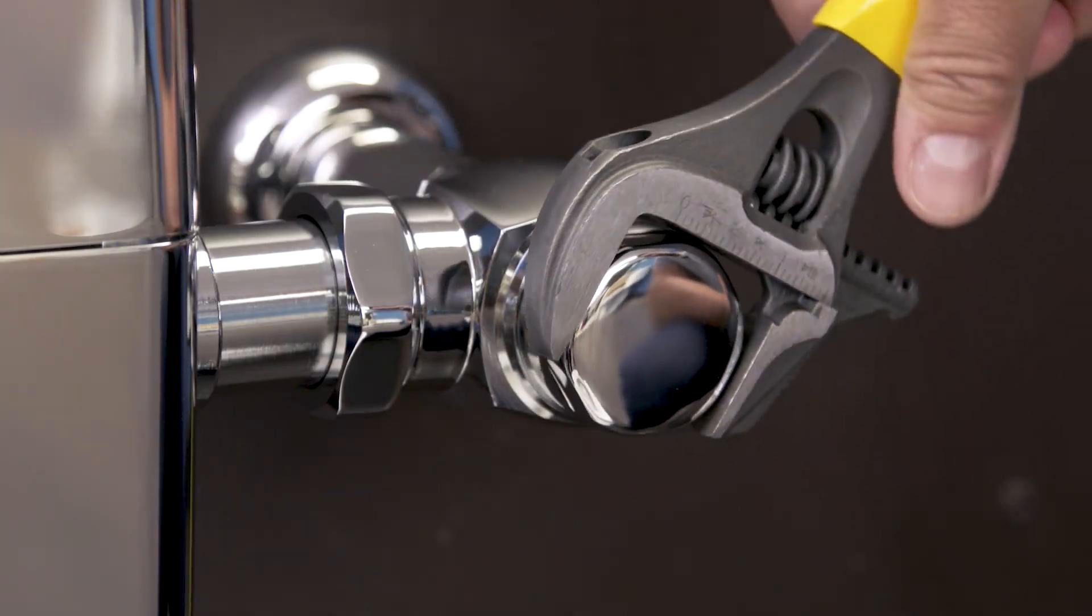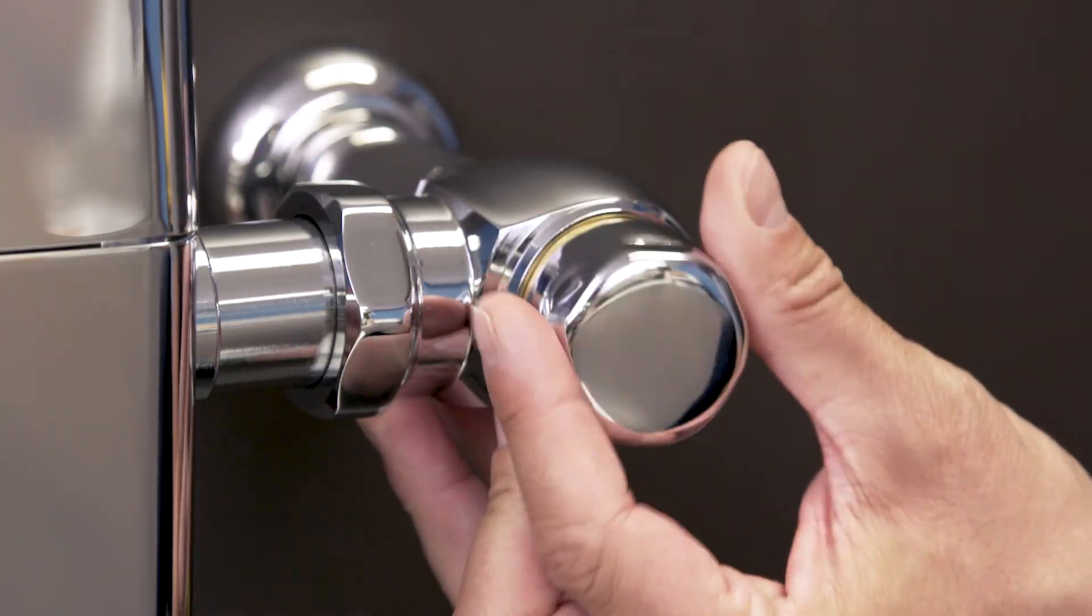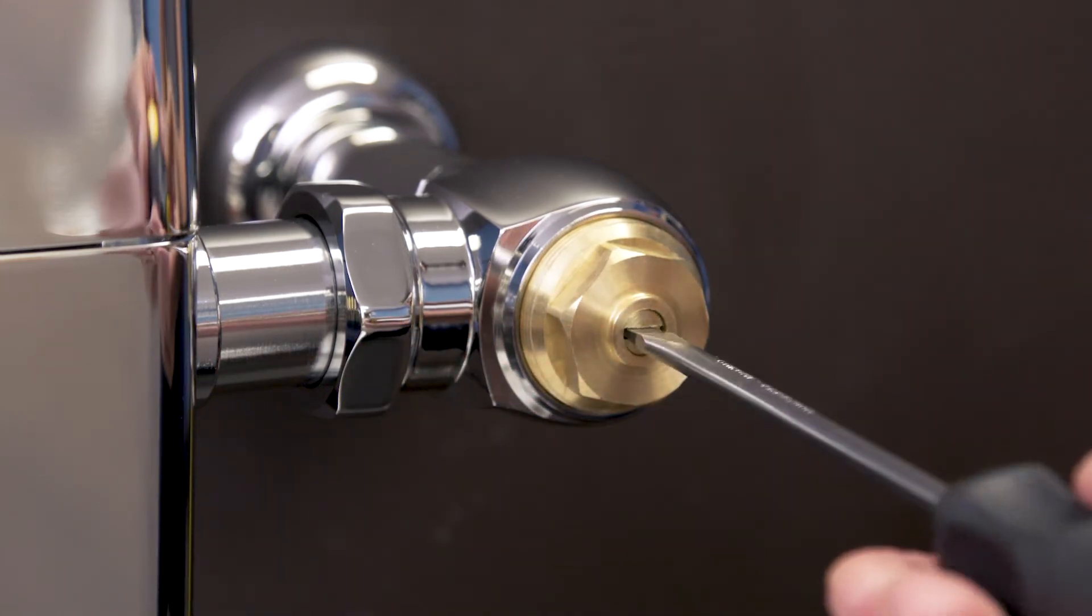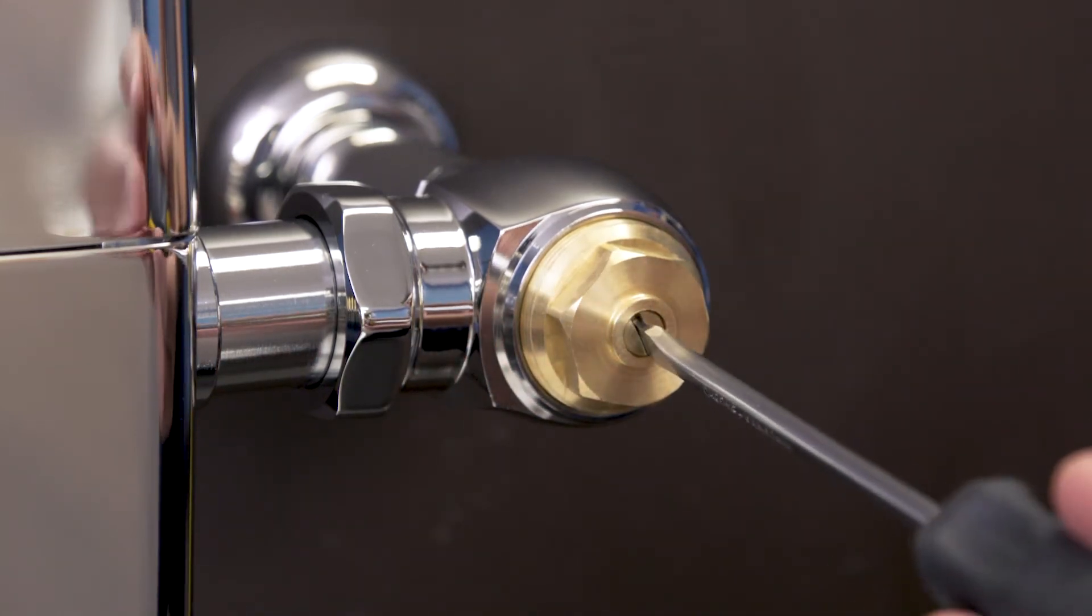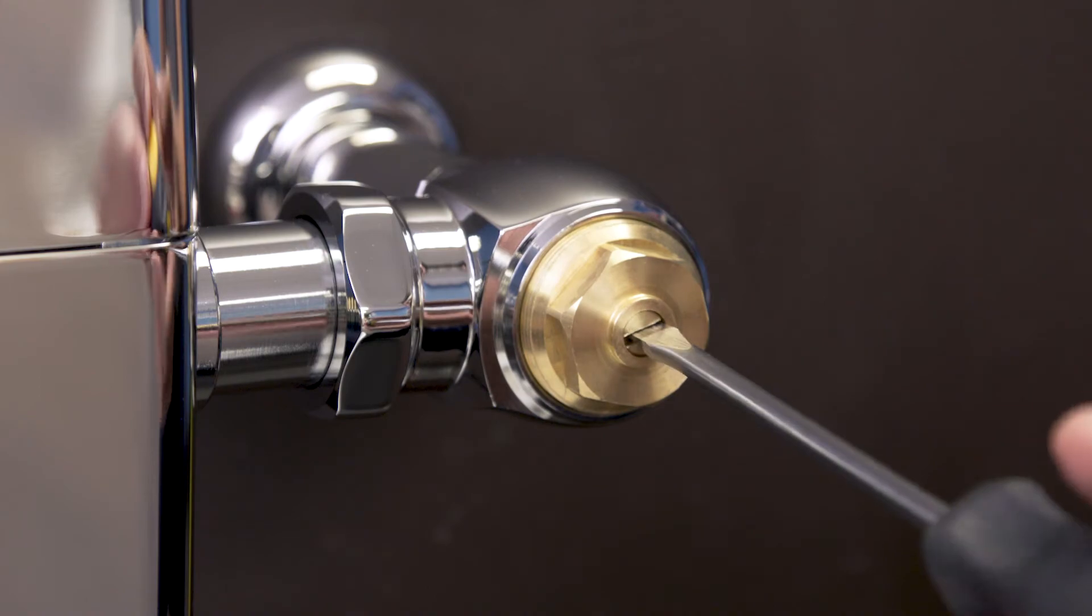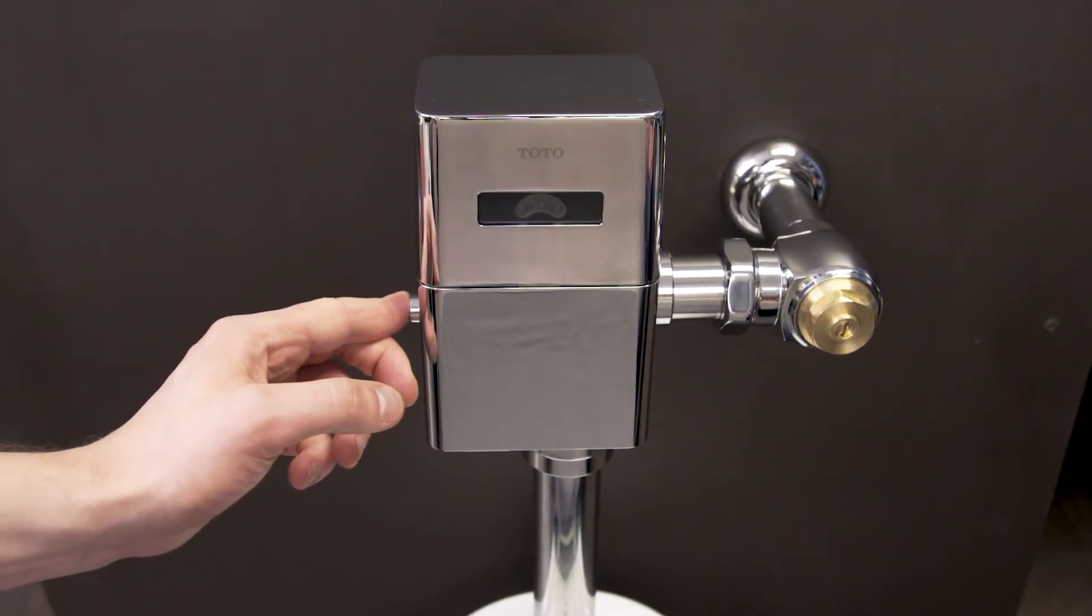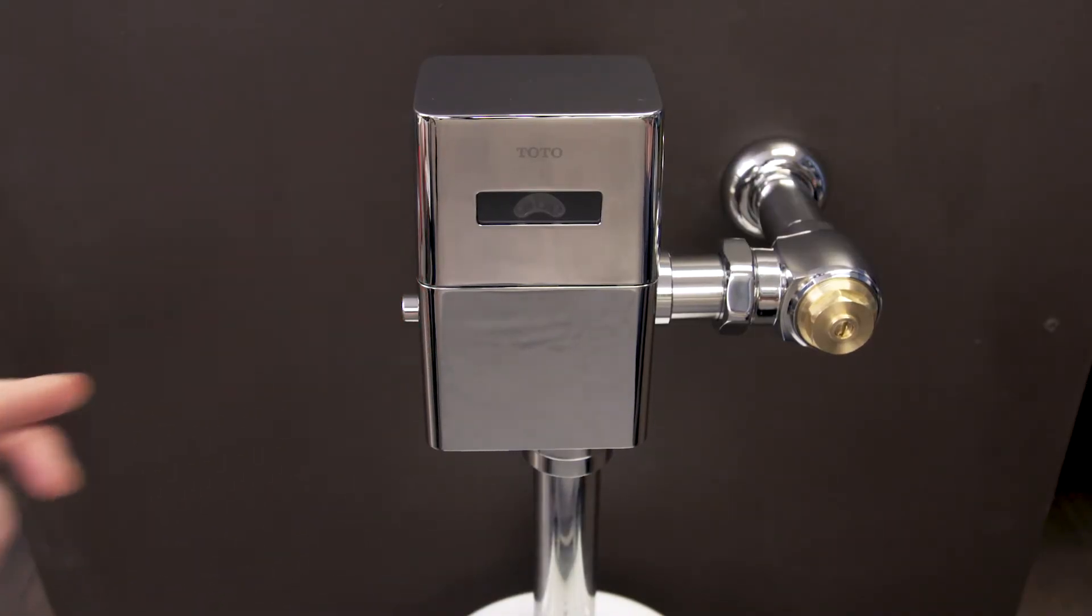First, shut off the water to the flushometer. Remove the cap and use a flat blade screwdriver to turn the screw clockwise until the control stop closes. Next, hold down the button to remove any remaining water.